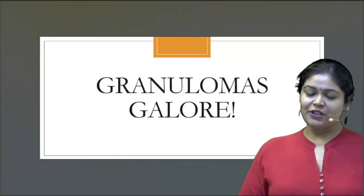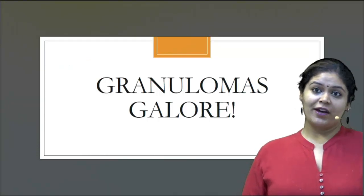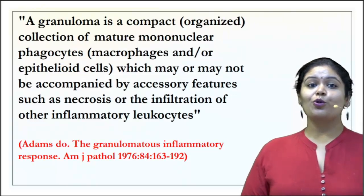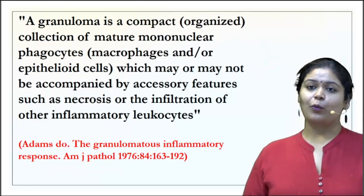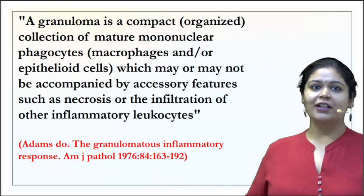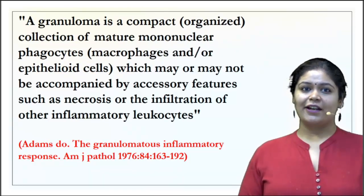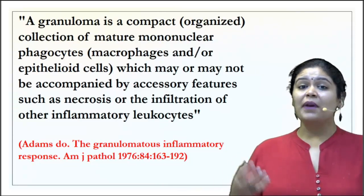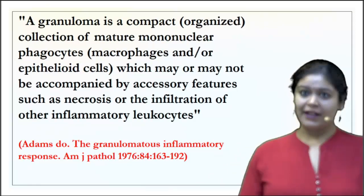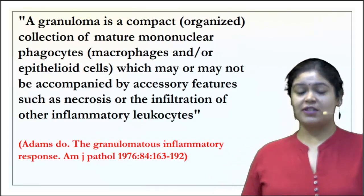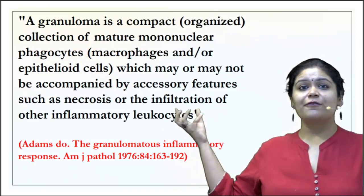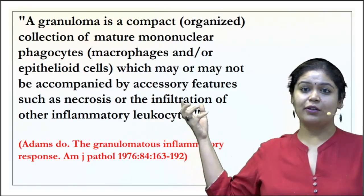Granuloma information troubles a lot of people — it's almost everywhere and still we can't seem to figure out what kind and where. A granuloma is a compact, organized collection of mature mononuclear phagocytes, which are macrophages, and/or epithelioid cells, which may or may not be accompanied by accessory features like necrosis or other inflammatory cells. The principal cell of a granuloma is an epithelioid cell, or epithelioid histiocyte, which is a macrophage.